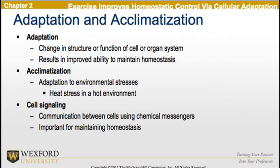Adaptation is the change in the structure or function of a cell or organ system, and this results in an improved ability to maintain homeostasis. Acclimatization is the adaptation to a particular environmental stress — heat stress in a hot environment is one example. Cell signaling is the communication between cells using chemical messengers, and this is extremely important for maintaining homeostasis in the body.